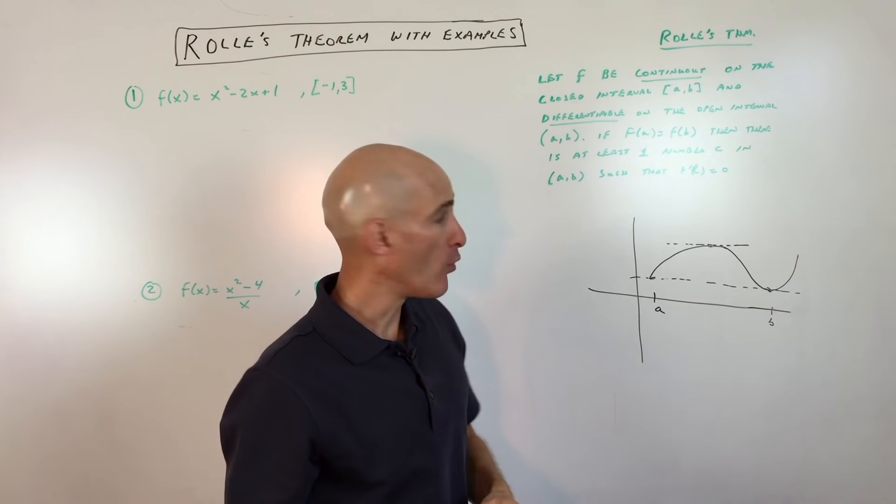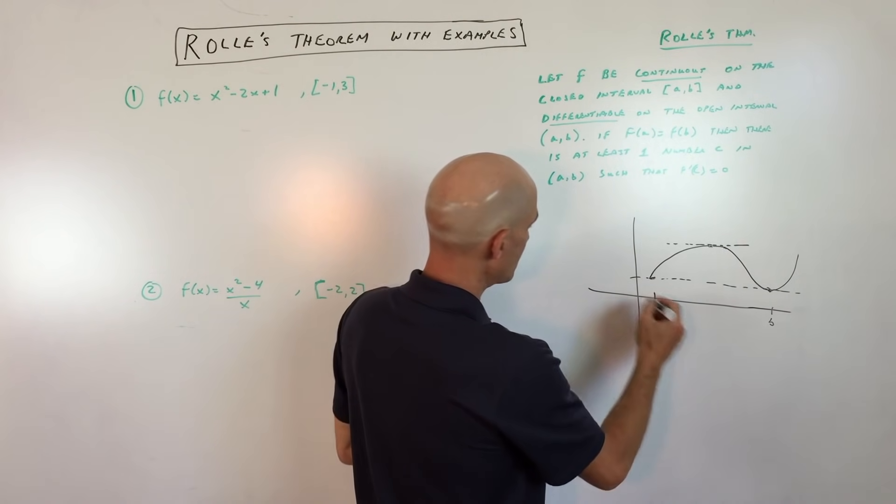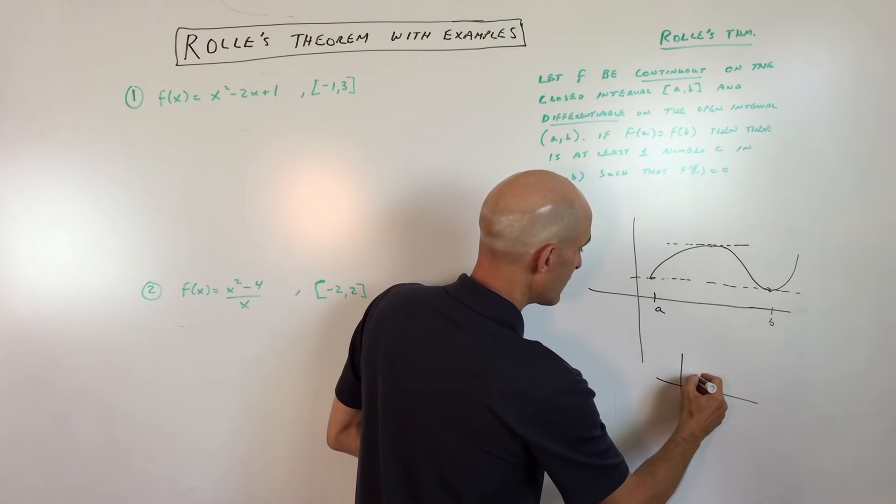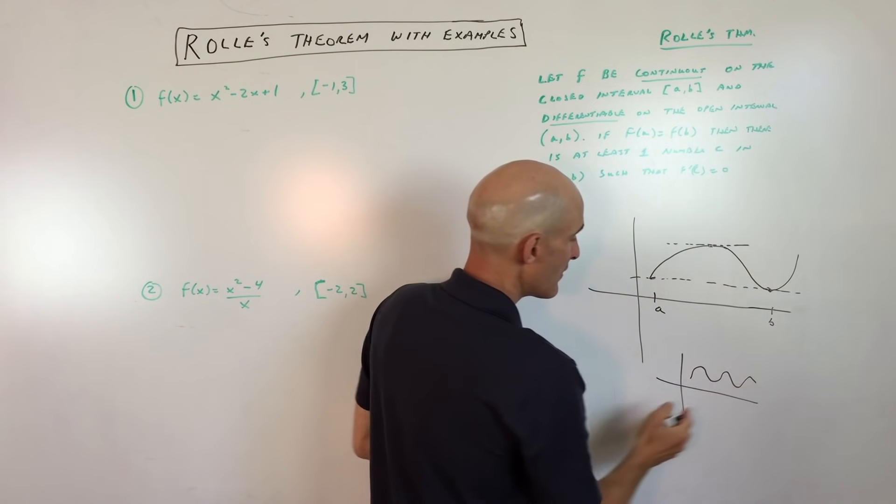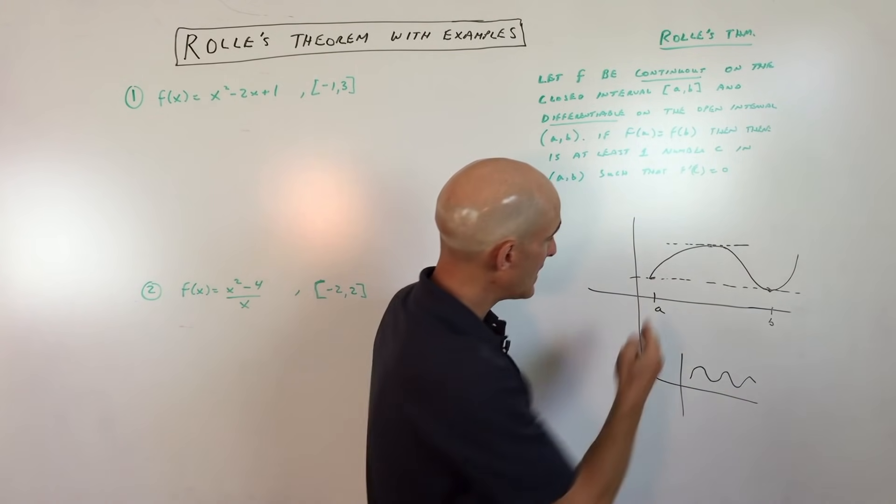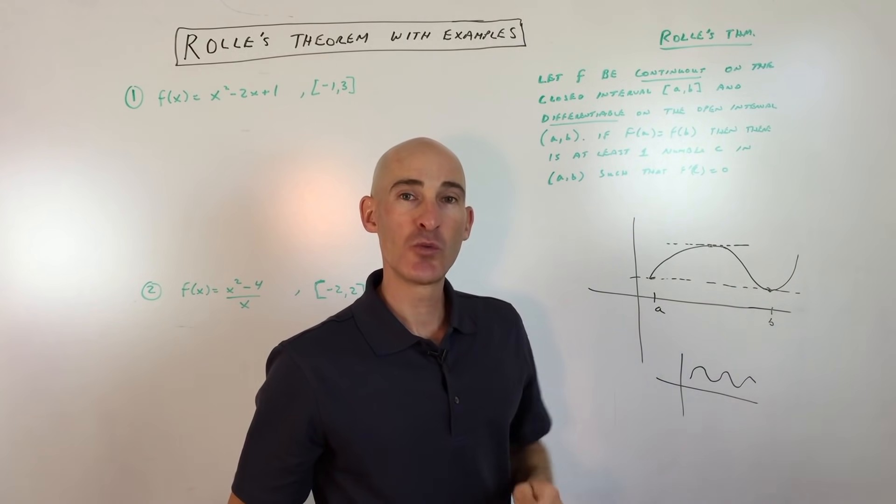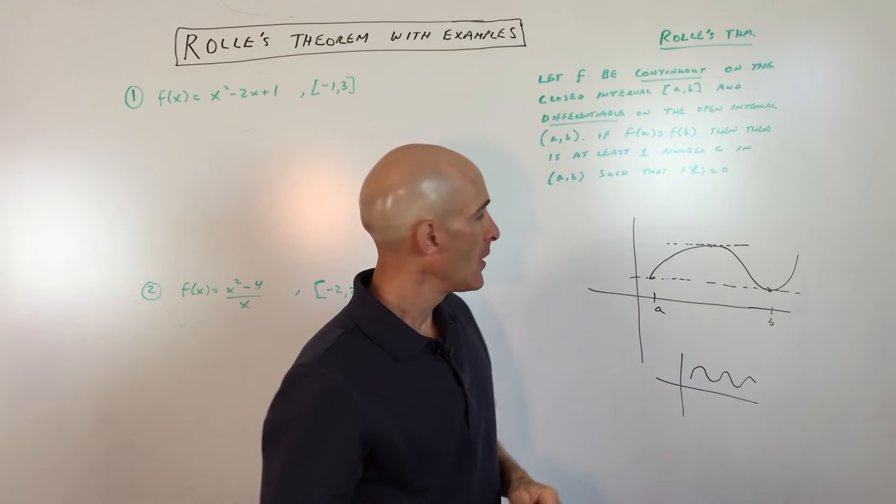Now it can occur at more than one point. So say, for example, if the graph was looking more like this, then there could be multiple points in between a and b where the slope of the tangent line is zero.